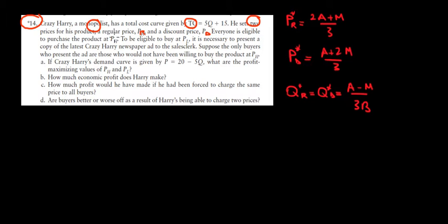Now everyone can buy the product at the regular price. To be able to buy it at the discount, it's necessary to present a copy of the latest Harry newspaper. Now suppose that the ones who buy the ad are those who are not willing to buy it at the regular price. In other words, there's going to be a market that pays the regular price and a market that pays the discount price. So we are segmenting, we are discriminating.